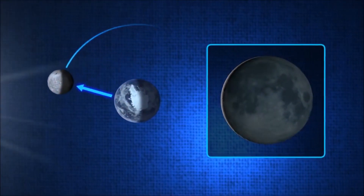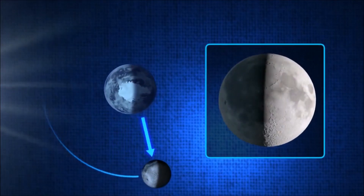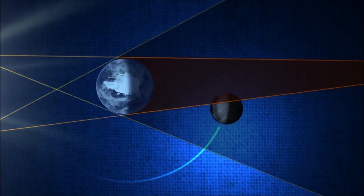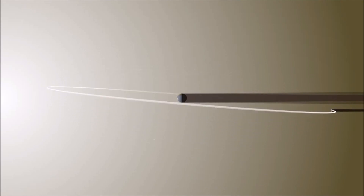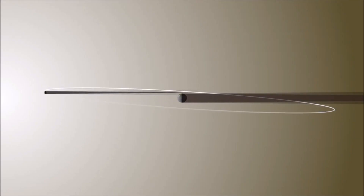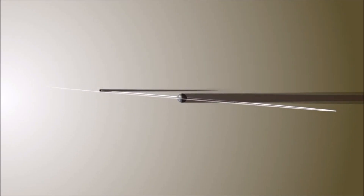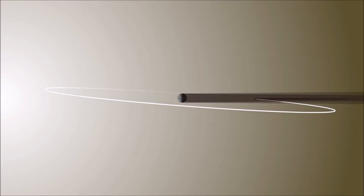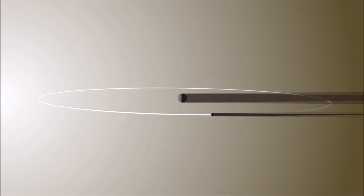Lunar eclipses can only occur when the moon is full, when the sun, moon, and Earth are perfectly aligned. Because the moon's orbit around the Earth is tilted, lunar eclipses do not occur every time there is a full moon. Because the moon's orbit changes throughout the year, about twice a year the moon's orbit will match up with the Earth's orbit enough to cause a lunar eclipse.